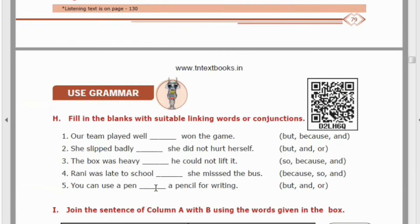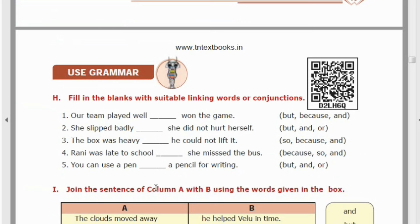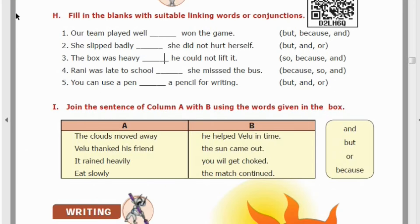This is your conjunction explanation. Now let's look at the first exercise — Exercise H: Fill in the blanks with suitable linking words or conjunctions. Linking words, connecting words, conjunction — all are the same meaning. Any word that joins two sentences together is called a conjunction, connecting word, or linking word.